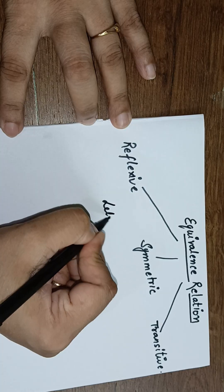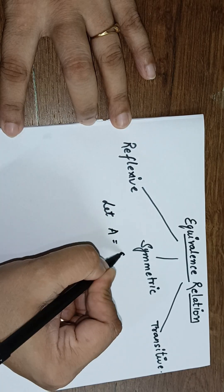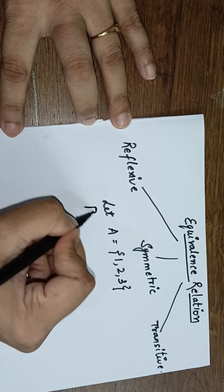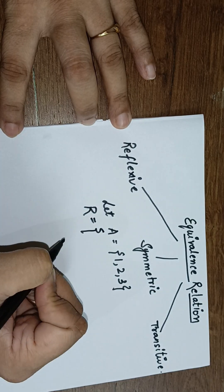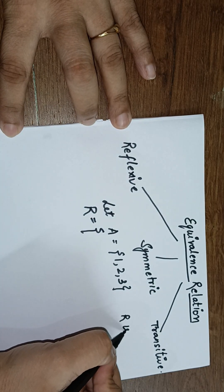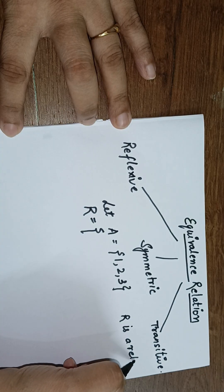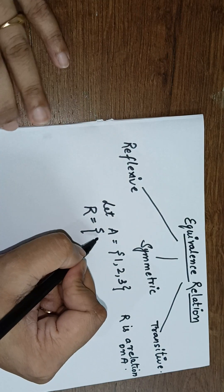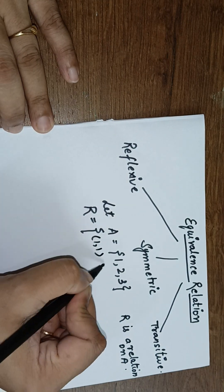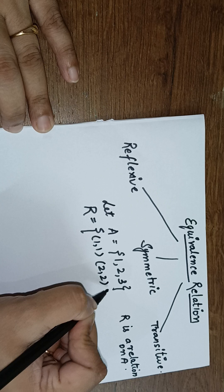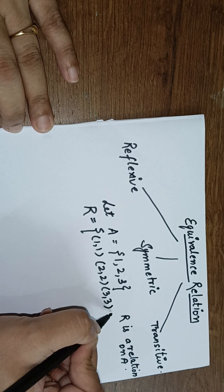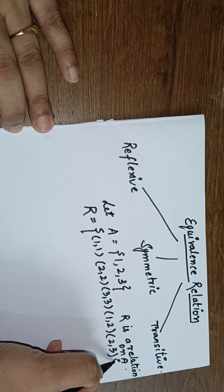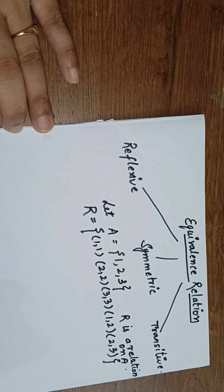Let us consider we have a set A which contains three elements: 1, 2, 3, and let us consider a relation R on A. The elements in R are: (1,1), (2,3), (3,1), (2,2), and (2,3). These are the elements in the relation.